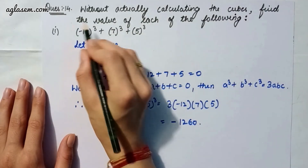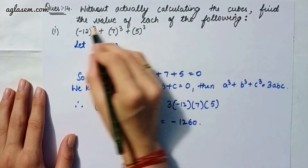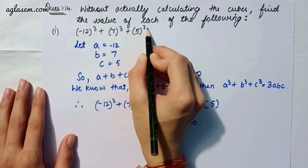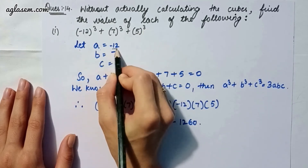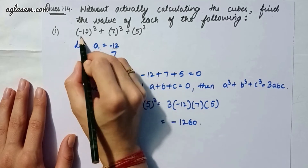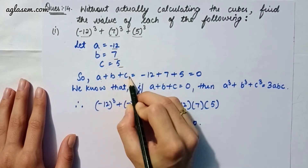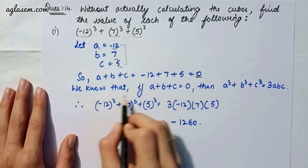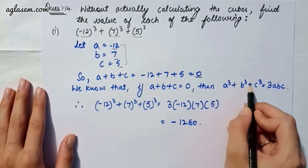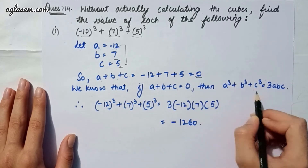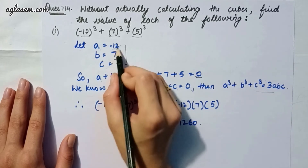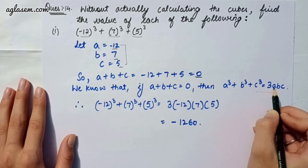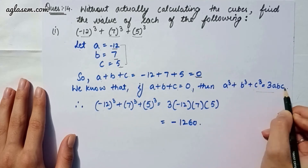Question 14: Without actually calculating the cubes, find the value. Part one: (-12)³ + 7³ + 5³. Let a = -12, b = 7, c = 5. Then a + b + c = -12 + 7 + 5 = 0. Since a + b + c = 0, we apply the formula a³ + b³ + c³ = 3abc. So (-12)³ + 7³ + 5³ = 3 × (-12) × 7 × 5 = -1260.